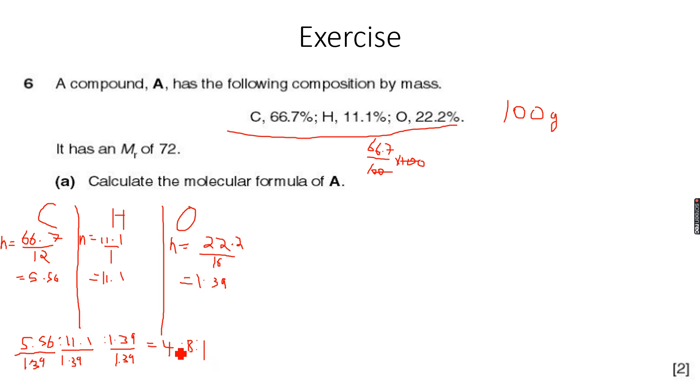Now this is the simplest whole number ratio of C, H, and O. So the empirical formula - I am writing EF for empirical formula - is equal to C4H8O.